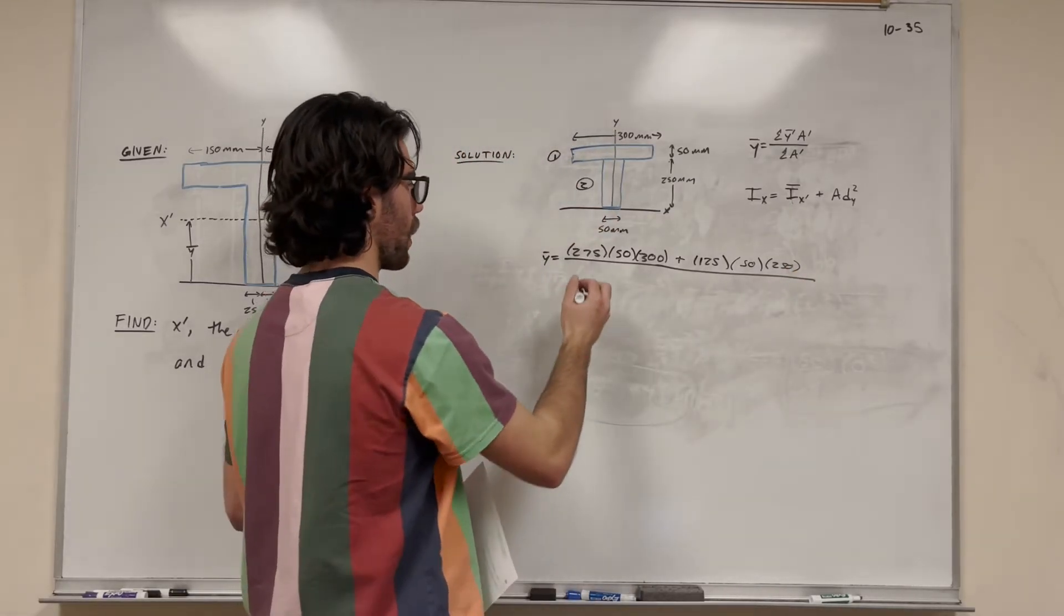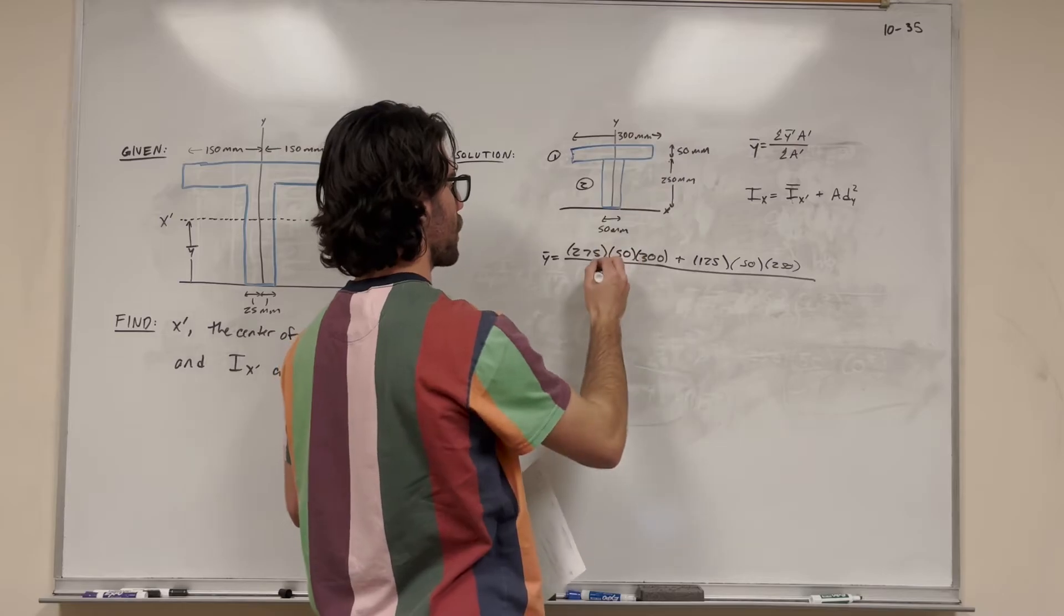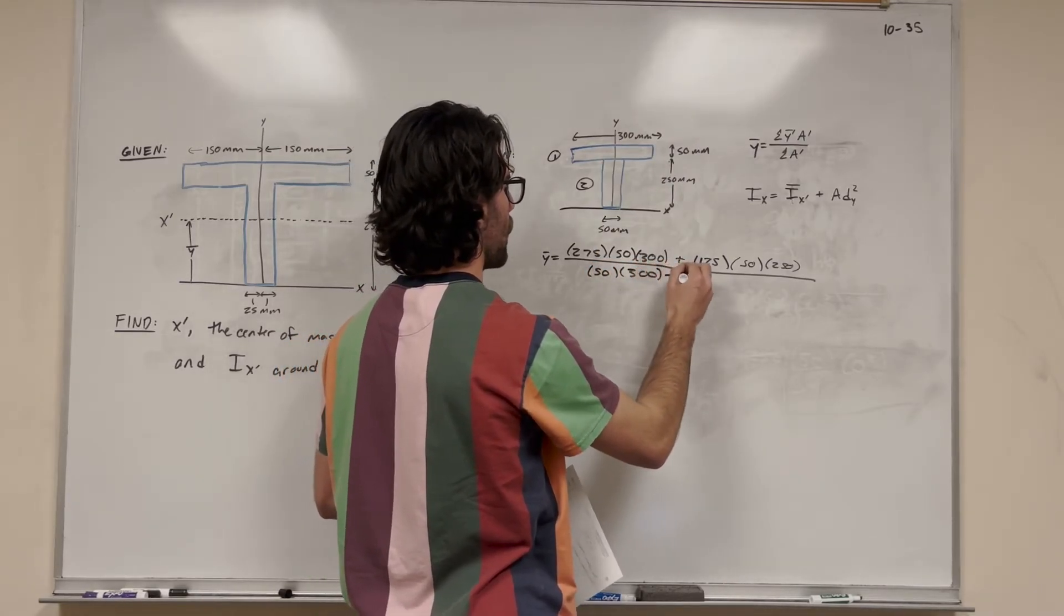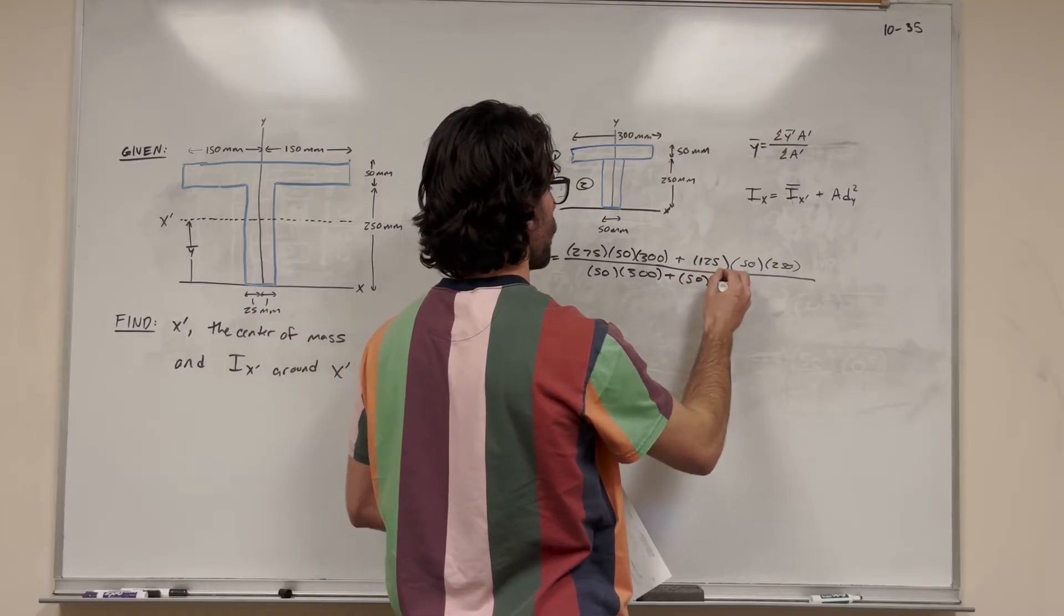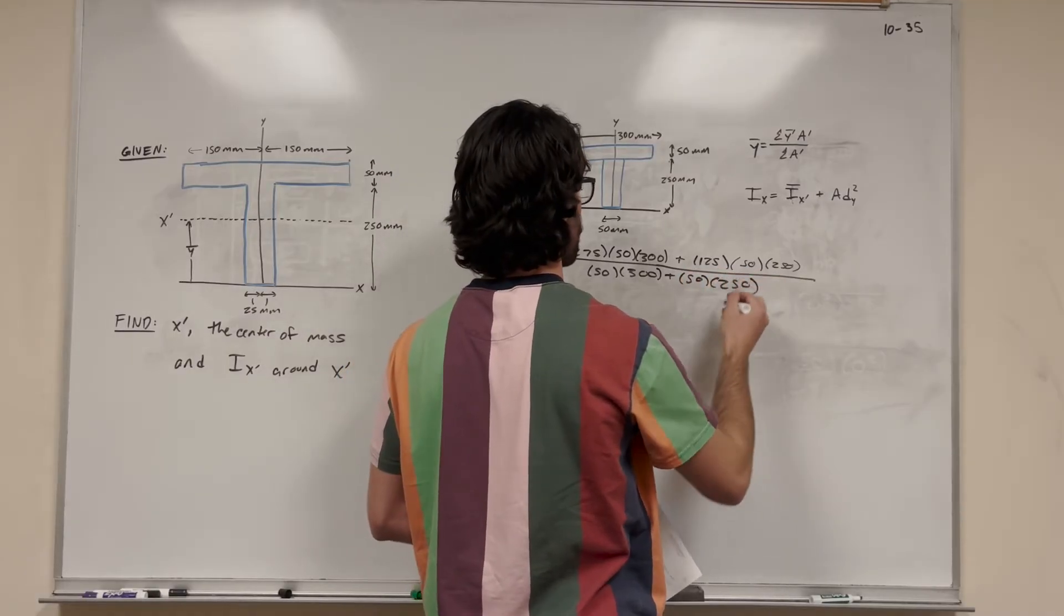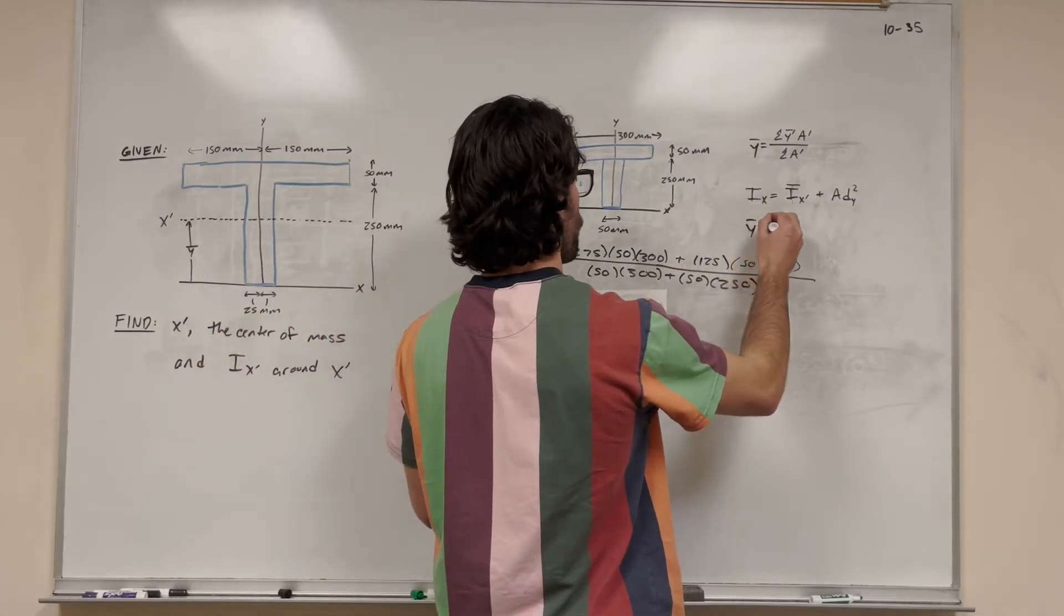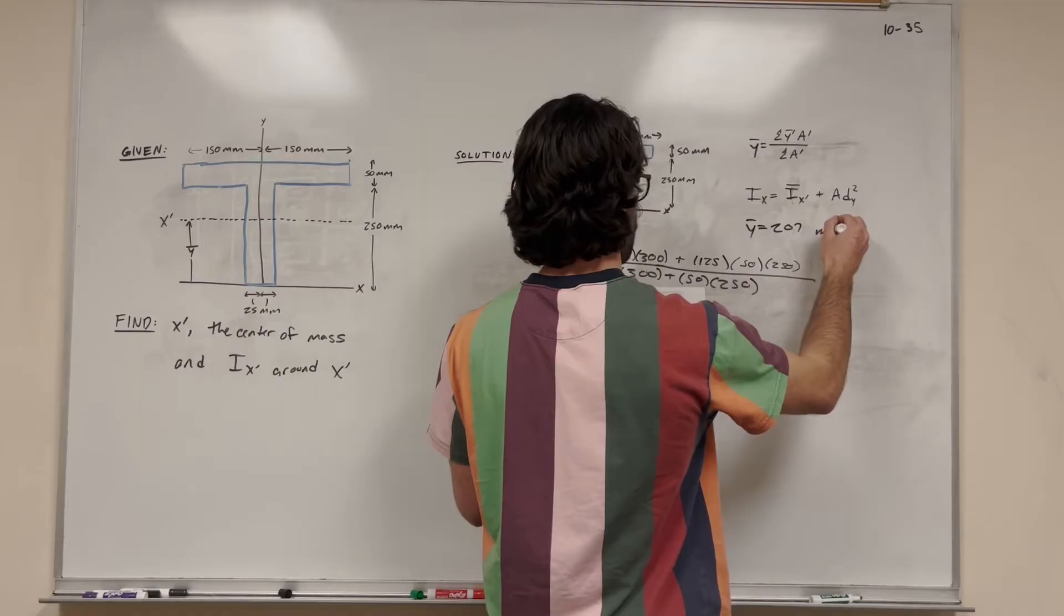Now we just need to sum up the whole area. So we're going to do the area of this top rectangle, which is base times height. And then we're going to add it to our next one, which is base times height. Cool. So this is our equation for y bar. And I'll write you up here, whatever we get, y bar is equal to 207 millimeters.